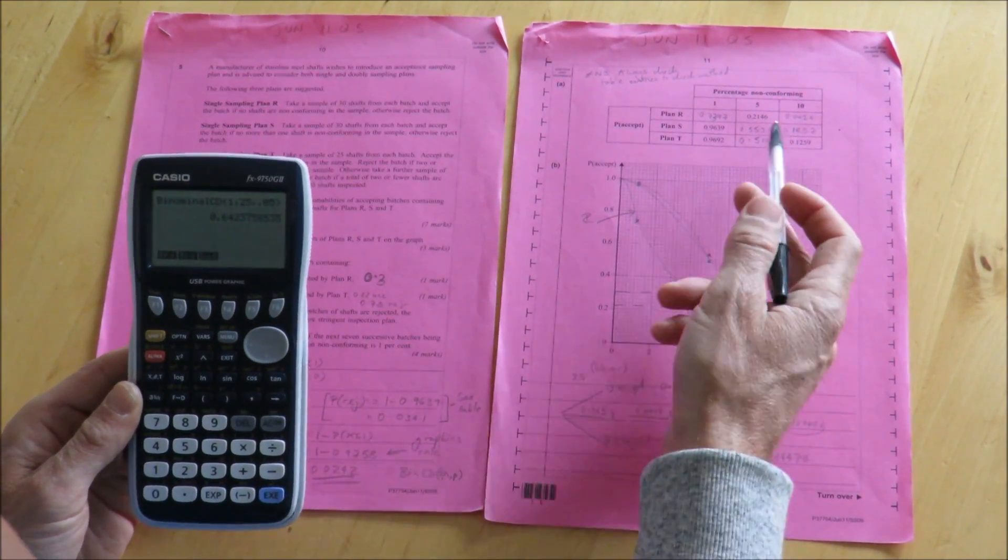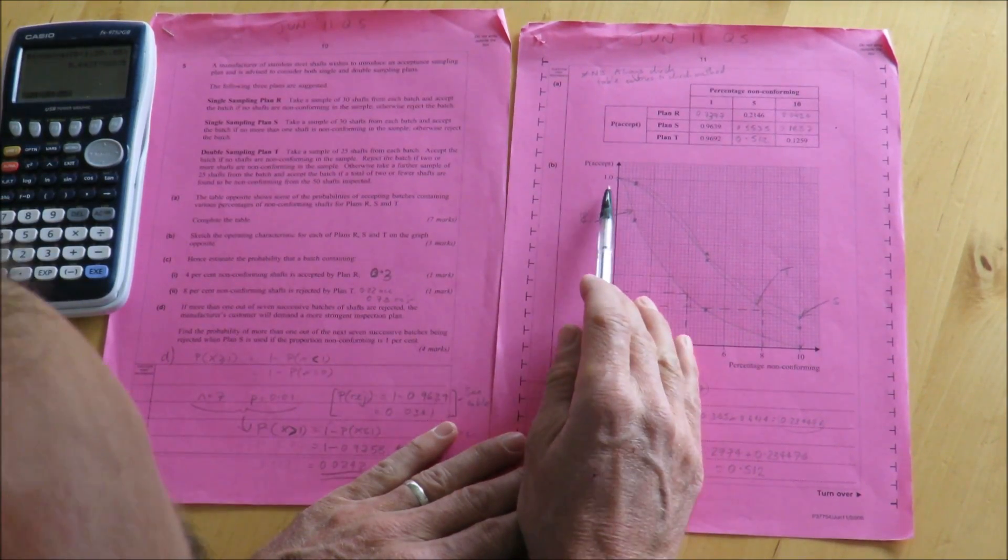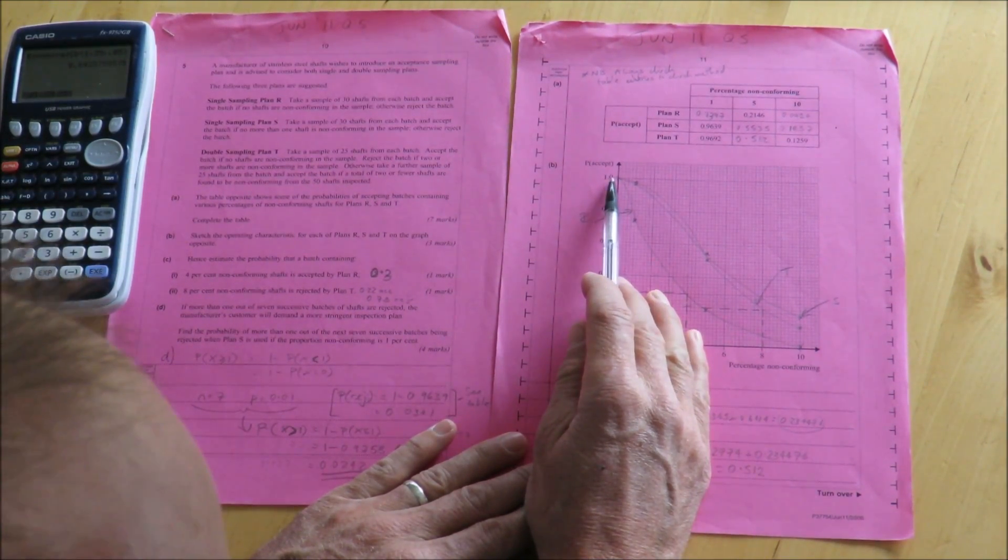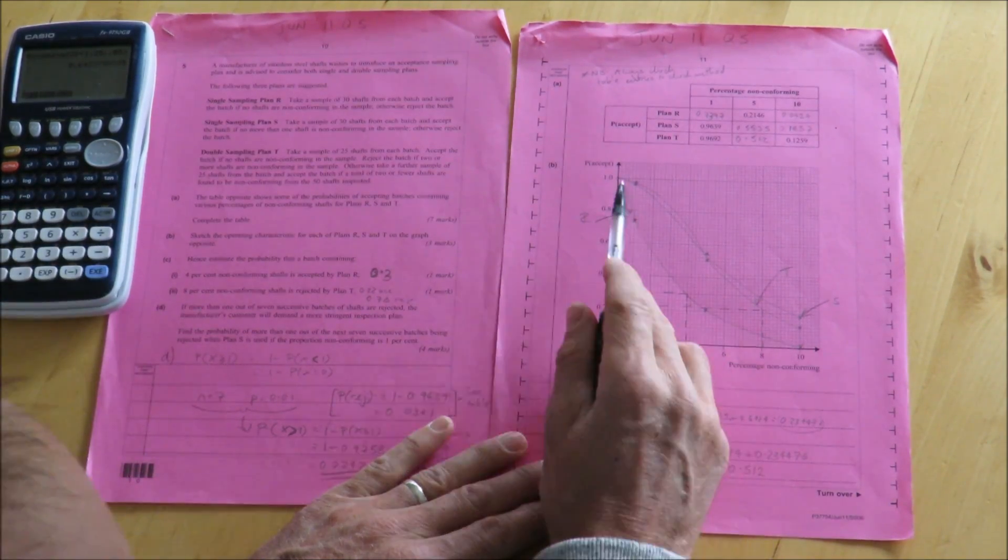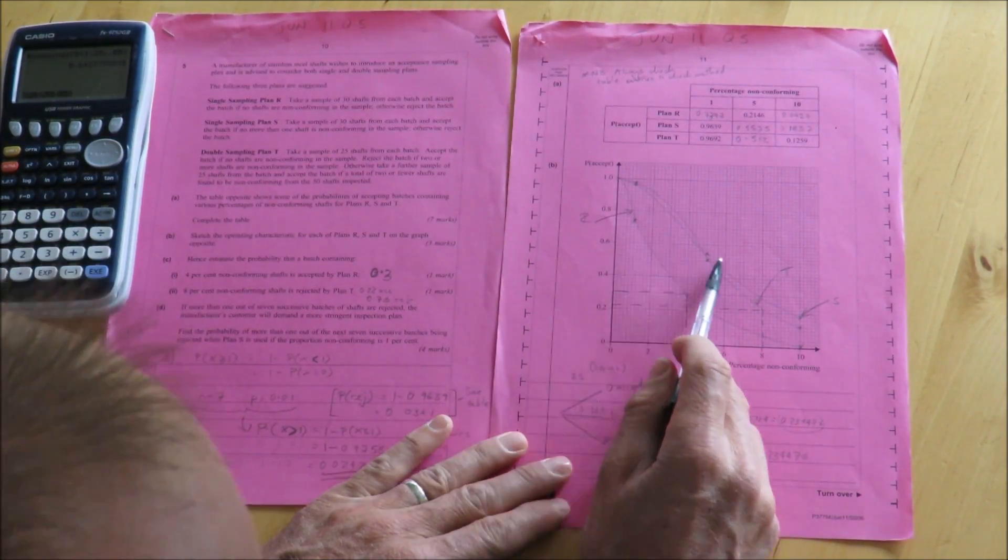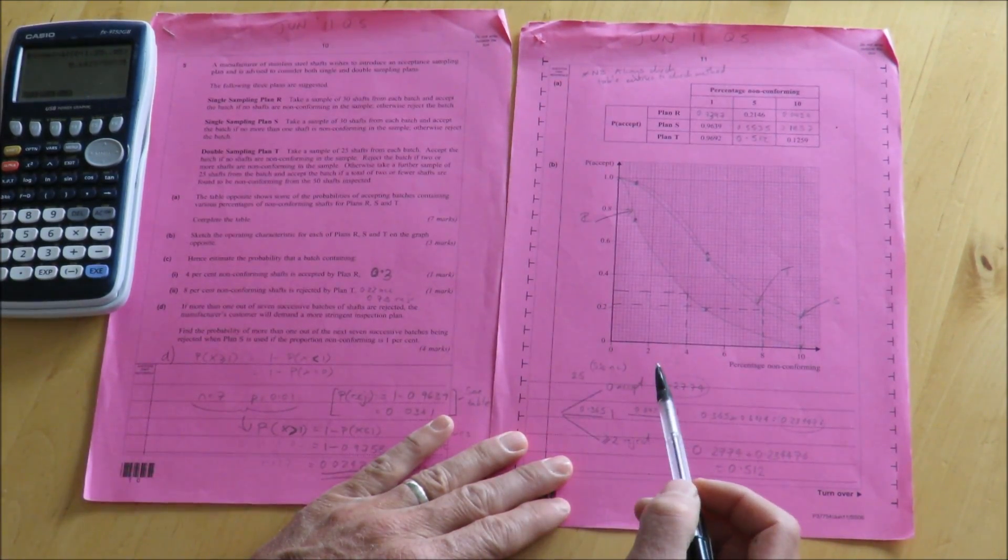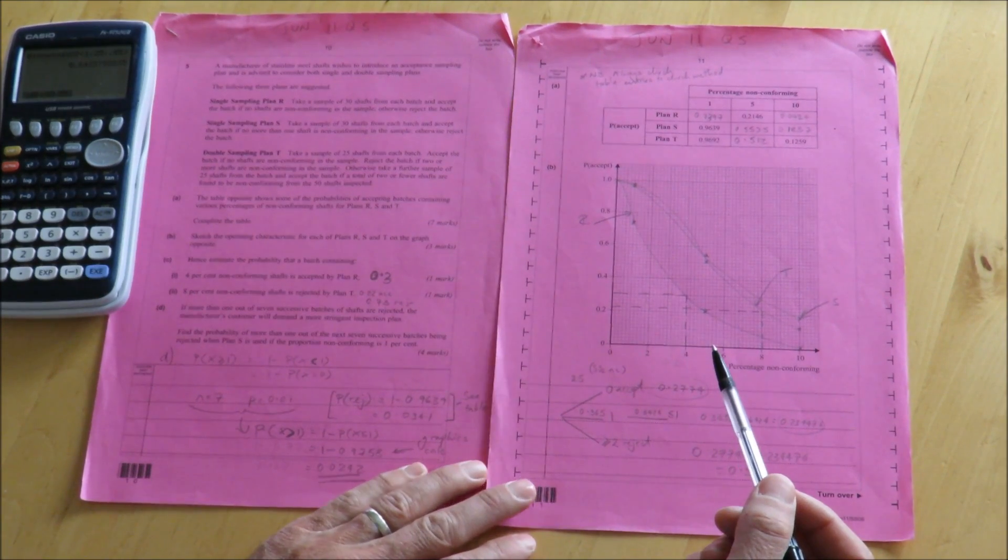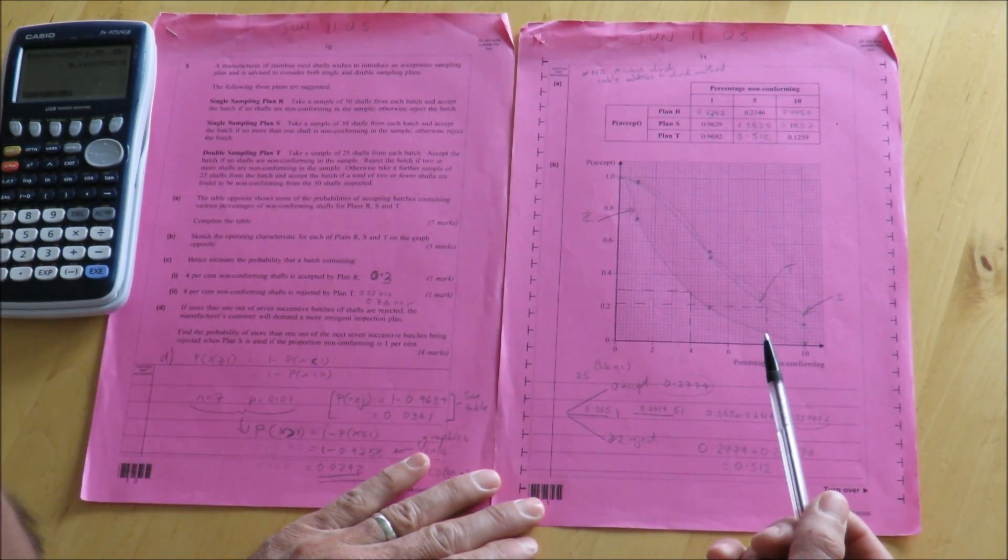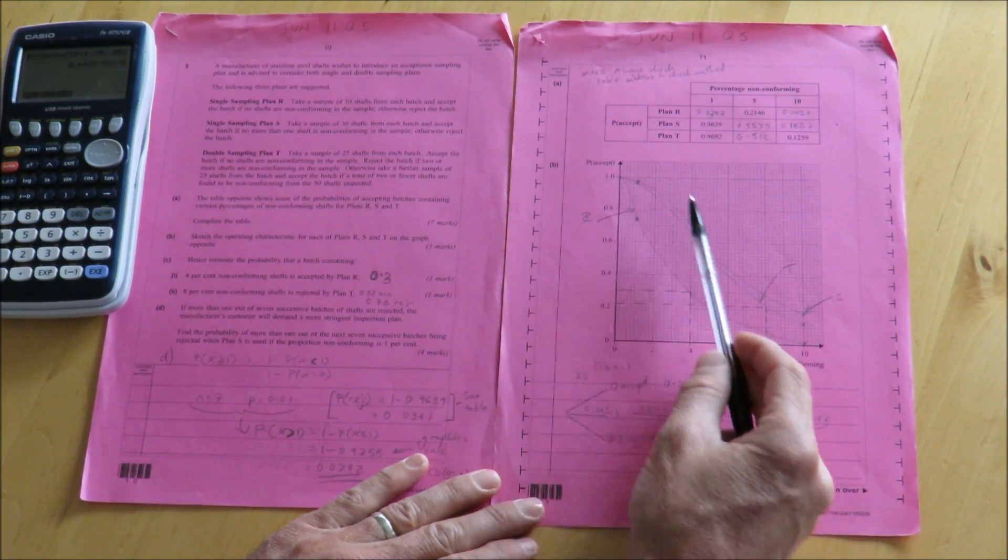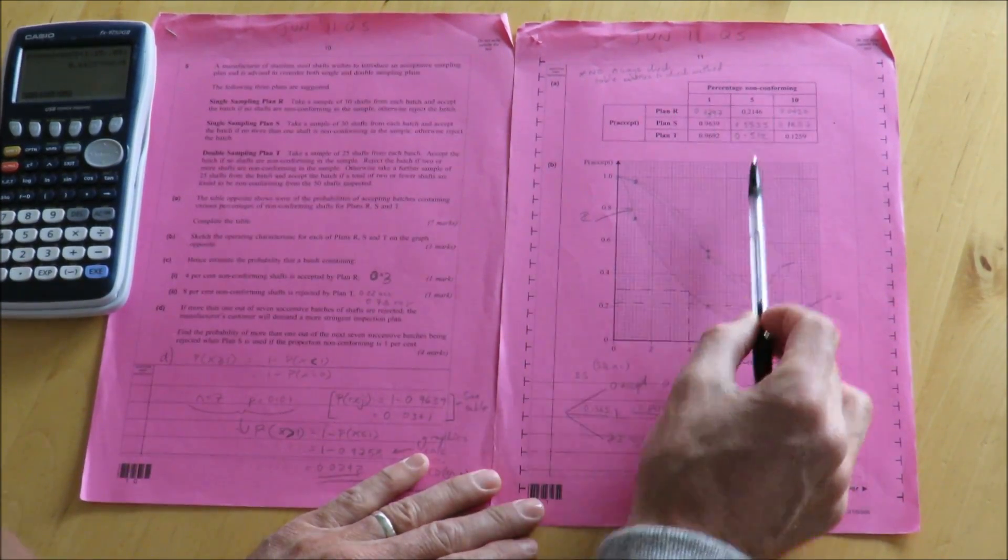Now, having calculated all of those values and completed the table, what I'm now going to do is to draw the operating characteristics for each of these, being very careful to label them. So R, here's S, and T. Remember, our ideal shape looks something like this, because that's the operating characteristic which best distinguishes between good and bad batches. Having done that, and drawn the operating characteristics, I'm now up to 10 marks, so there's heavy mark scoring for this.